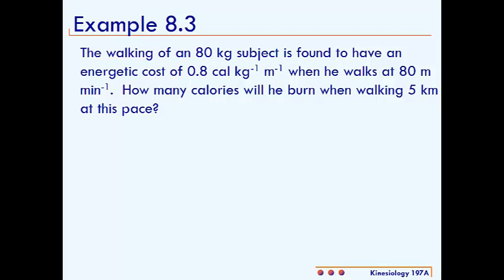This is Example 8.3. The walking of an 80 kilogram subject is found to have an energetic cost of 0.8 calories per kilogram meter when he walks at 80 meters per minute. How many calories will he burn when walking 5 kilometers at this pace?